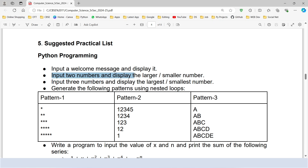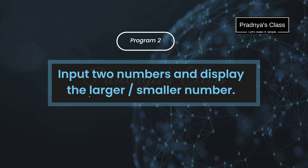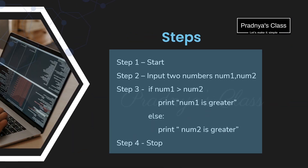Input two numbers and display the larger or smaller number. When we read the instruction, we could notice the word larger or smaller — it's a comparative degree, meaning we have to compare two things. And here we will be comparing two numbers. Before jumping to any idea and starting to write the program, let's understand the concept.